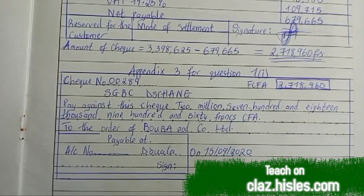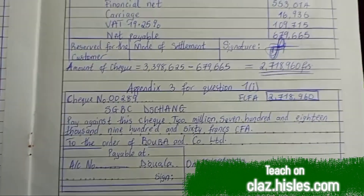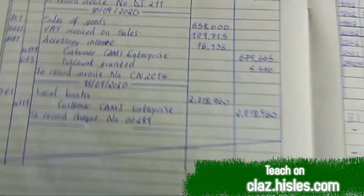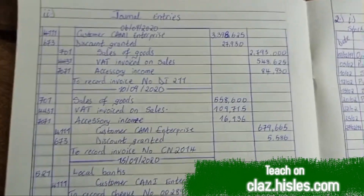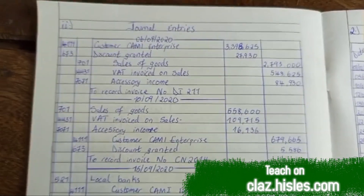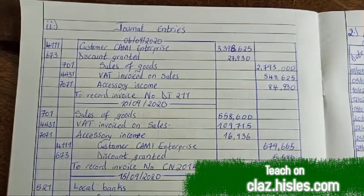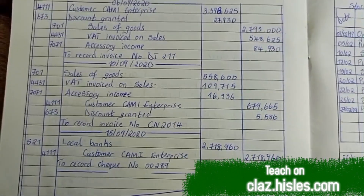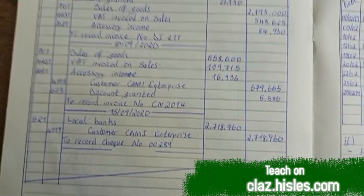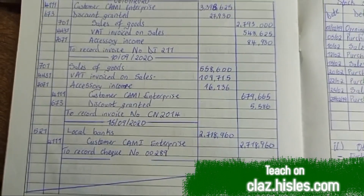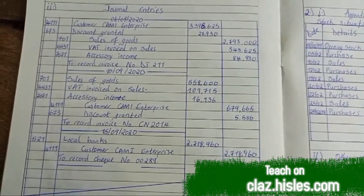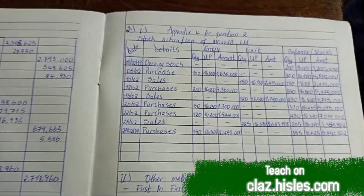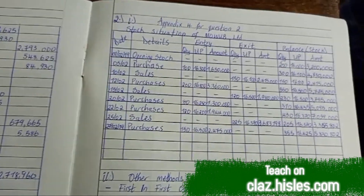The check was signed and dated, payable to the appropriate person. Then we had to draw the journal entries, where we recorded the debit note, the credit note, and the check sent to the supplier by the customer. That's everything for the first question.